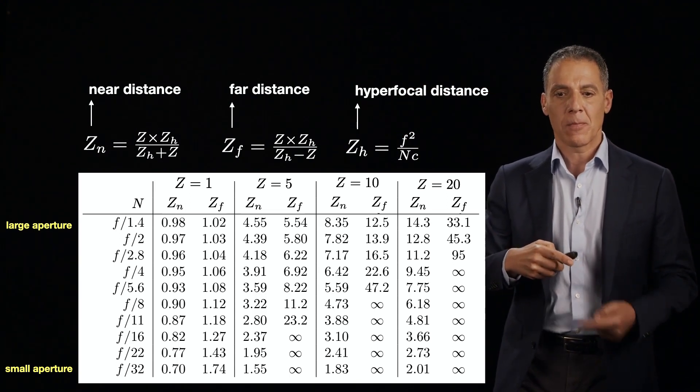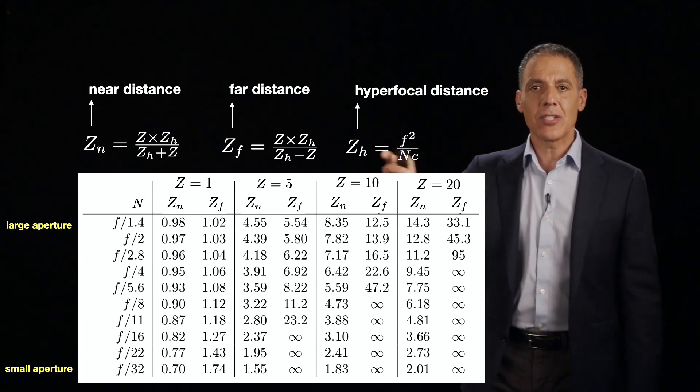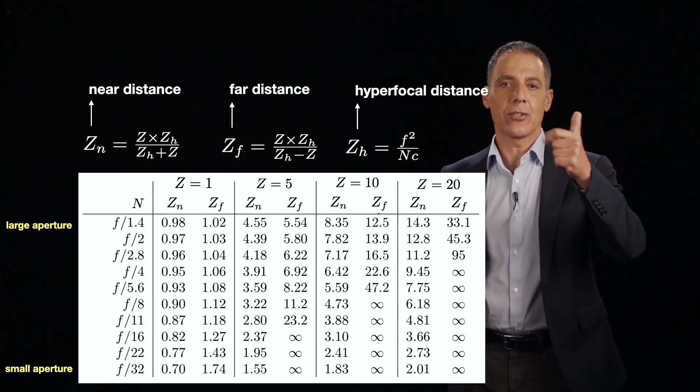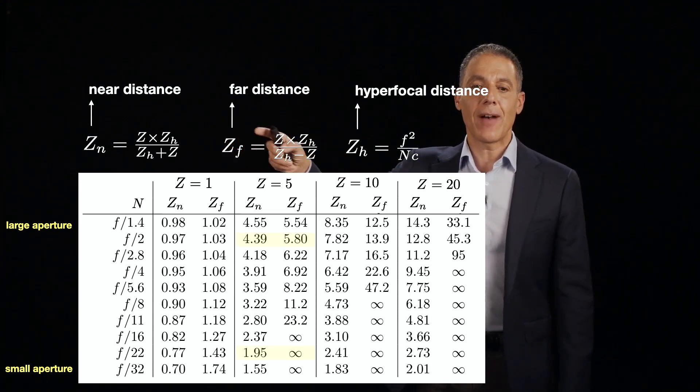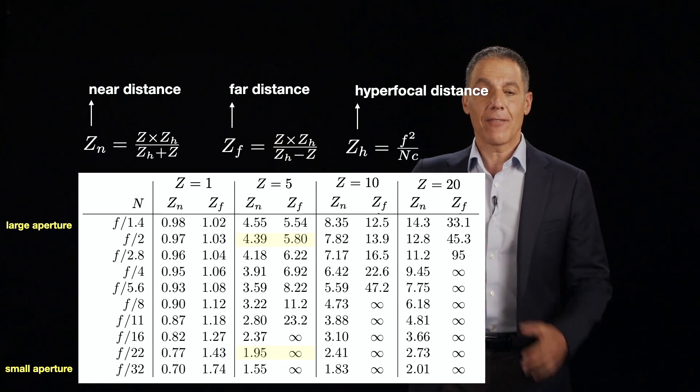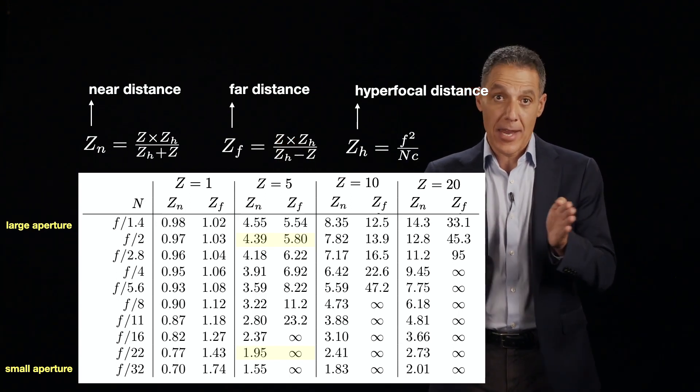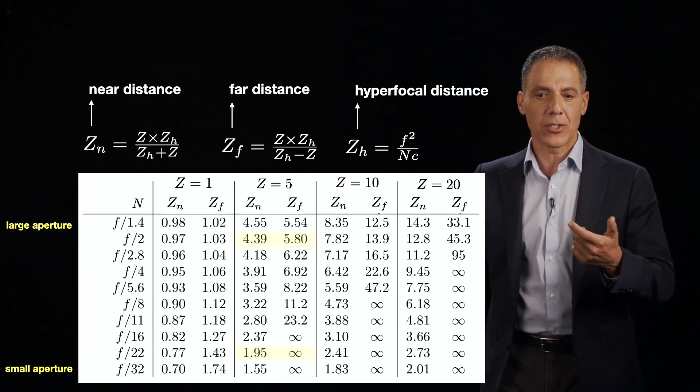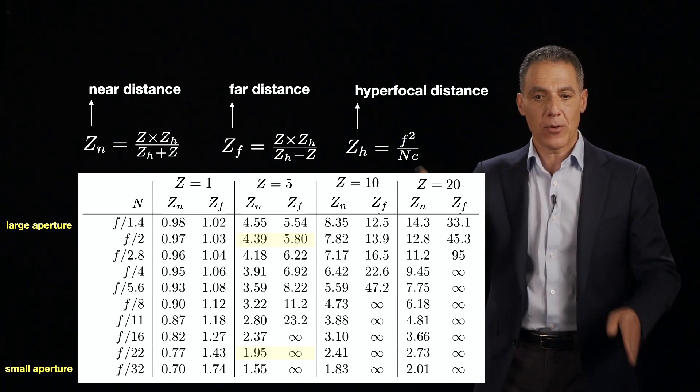And what I'm showing you in each of these columns for a distance of Z equals 20, 10, 5, and 1 is the near and far distance. So for example, let's go to a distance of say five meters. And if I have a large aperture, what do we expect? A narrow depth of focus, because the bigger the aperture, the more blurry things will be. And that's in fact what you see. You see that for something focused at five meters, the depth of focus is say 4.4 meters to 5.8 meters. Relatively narrow depth of focus.